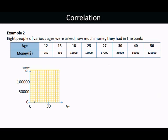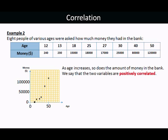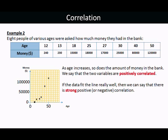Here's another example. Eight people of various ages were asked how much money they had in the bank. There's two pieces of information for each person. How old they are and how much money they've got. Plotting these on the graph, you get a general impression that as one goes up, so does the other. Those two things are positively correlated. As one increases, so does the other.